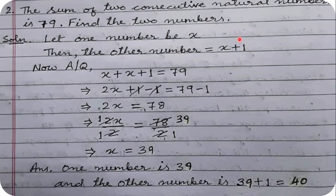Consecutive means occurring one after the other in serial order without skipping. For example, 1, 2, 3 are consecutive natural numbers, but 1, 4, 6 are not consecutive because some numbers are skipped in between. Here, two consecutive natural numbers add up to 79 and we need to find those two numbers.